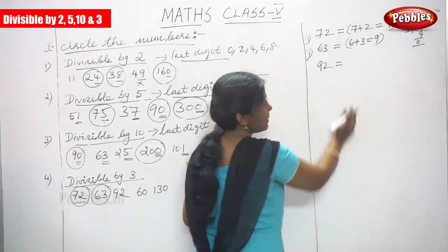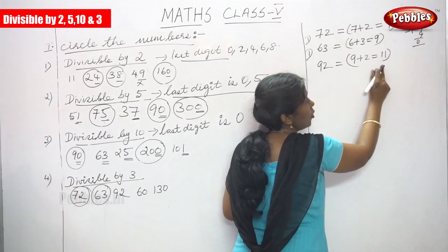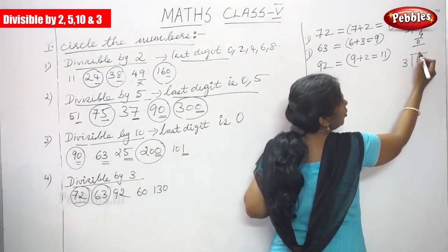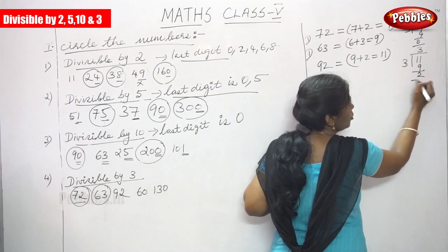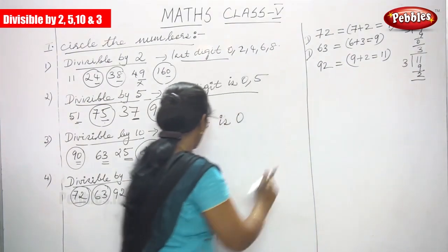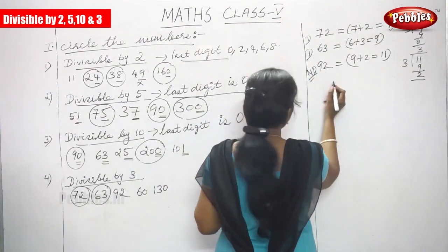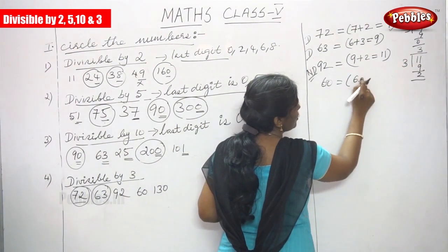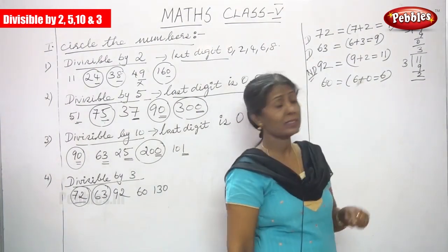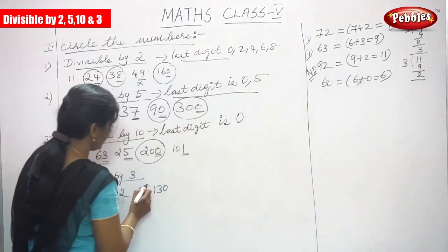Next is 92: 9 plus 2 equals 11. 11 is not divisible by 3 — if you divide 11 by 3, the remainder is 2, and the remainder must be 0 for divisibility. So 92 is not divisible by 3, do not circle it. Next is 60: 6 plus 0 equals 6, and 6 is divisible by 3, so 60 is also divisible by 3. Circle 60.